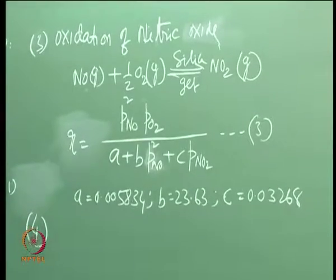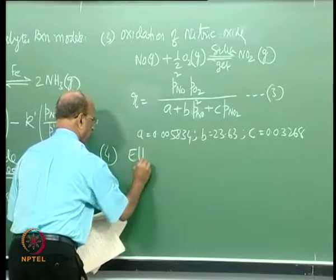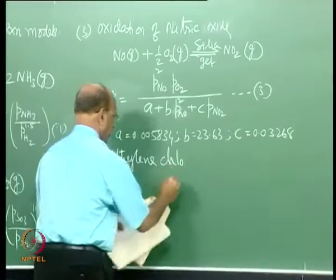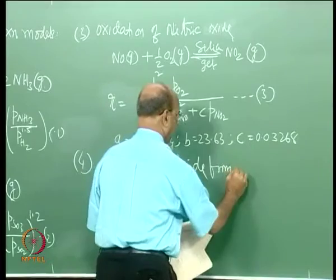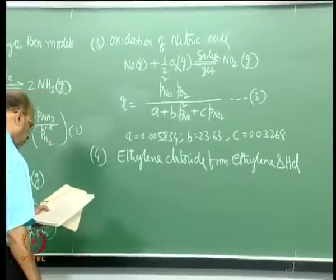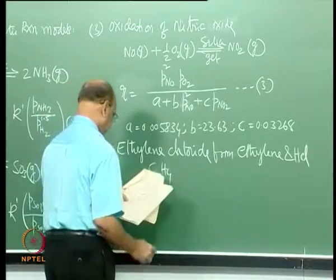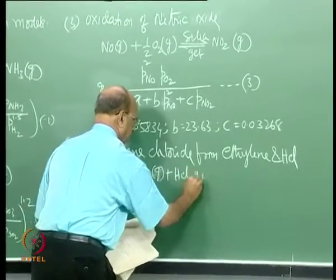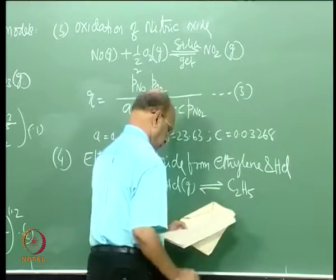Another example is ethylene chloride from ethylene and HCl. The equation is C₂H₄ (gas) + HCl (gas) giving C₂H₅Cl.